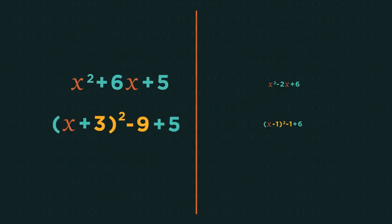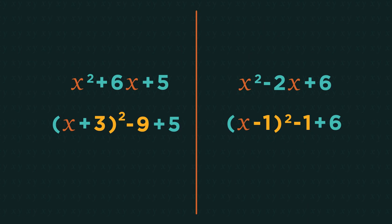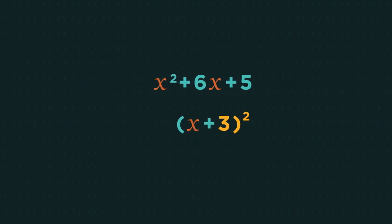But why do we subtract the square of the bracket number? Think of expanding brackets. So let's go back one step to this and expand the x plus 3 squared. We get x squared plus 6x plus 9. We don't want the plus 9. We just want plus 5. So to balance it out, we need to subtract 9. Which is why we always subtract the square of the number in the bracket.